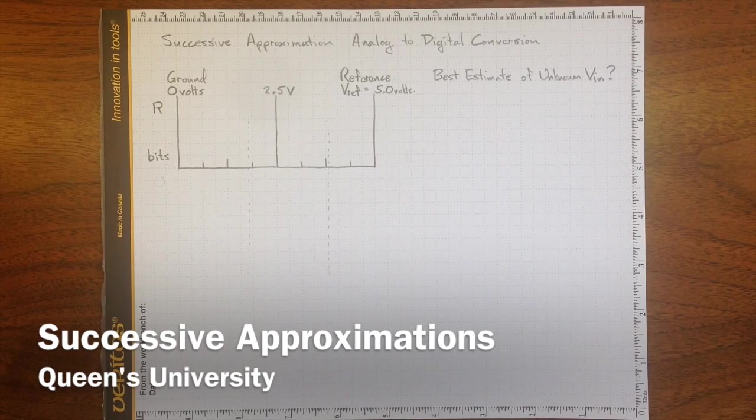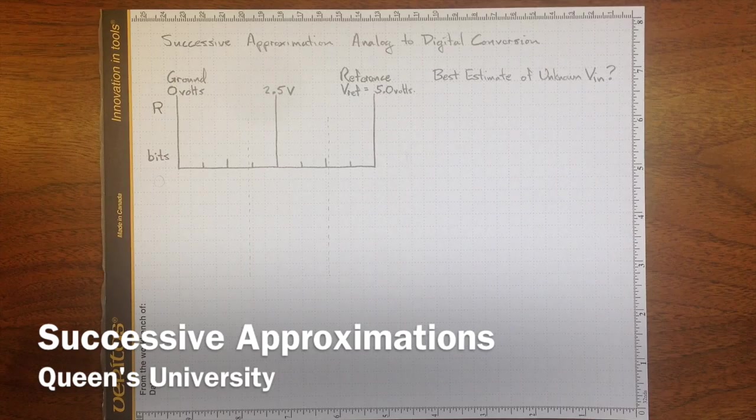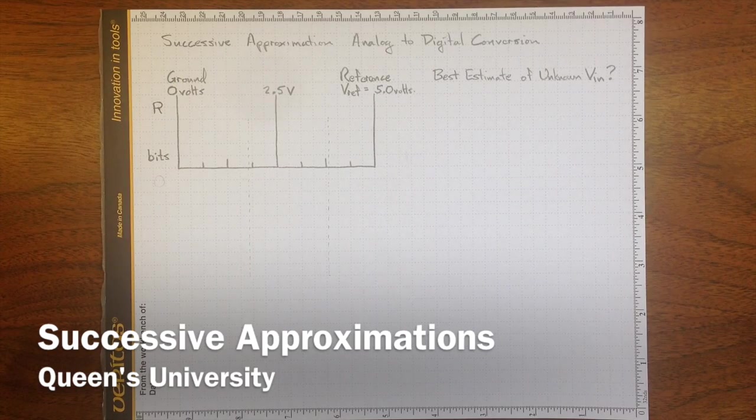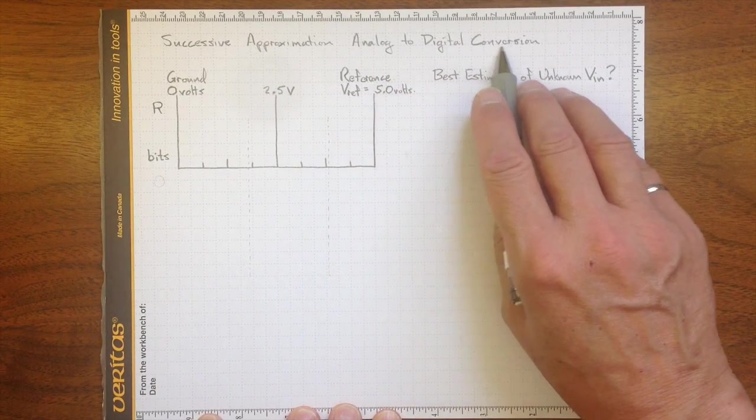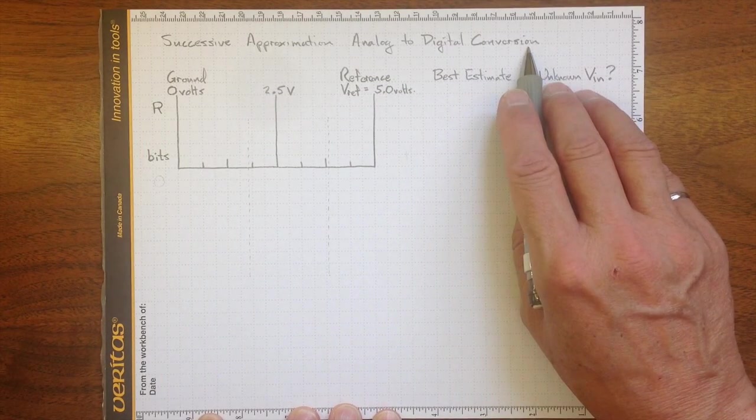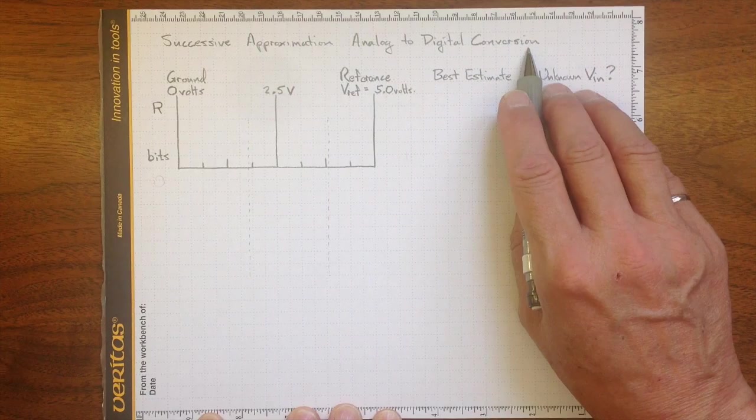Before you can manipulate a measured value with a computer program or a microcontroller program, you need to somehow convert it from an analog voltage to some kind of a digital representation so that you can do calculations on it.